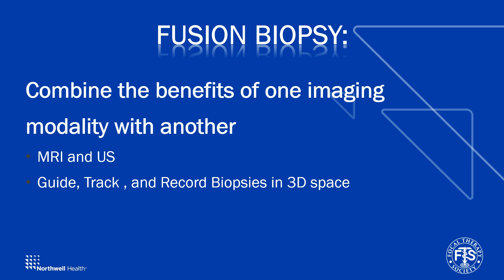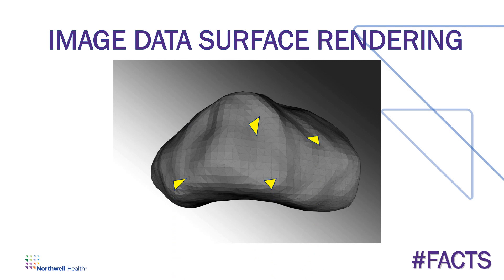Fusion technology itself allows us to guide, track, or record biopsies in 3D space. See these small triangles being placed over this mesh image? The data set looks the same to the computer from the MRI or the ultrasound — it's a surface mesh placed over the object. The computer uses a mathematical equation to match these triangles, which are unique to the contour of the prostate. We'll show you how this aligns in a moment.